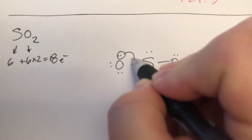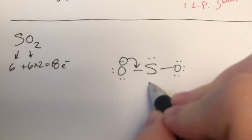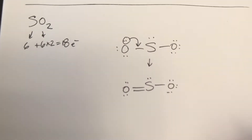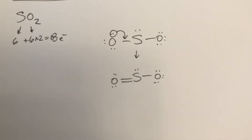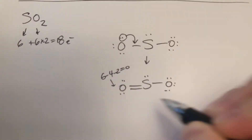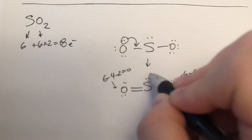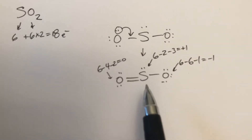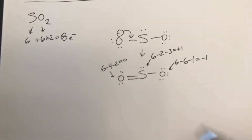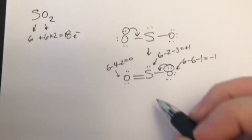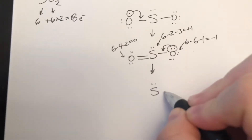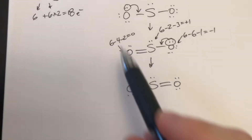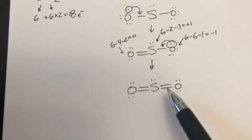Sulfur needs an octet — right now it only has six. So we form a double bond, but we still have lone pairs. Checking formal charges: the double-bonded oxygen is 6 minus 4 minus 2 equals 0; the single-bonded oxygen is 6 minus 6 minus 1 equals negative 1; and the sulfur is 6 minus 2 minus 3 equals positive 1. Because sulfur is in the third row, it can have more than an octet, so it will form another double bond. Doing so violates the octet rule, but it also gets rid of the charges — now everything is 6 minus 4 minus 2 equals 0, and sulfur is 6 minus 2 minus 4 equals 0.